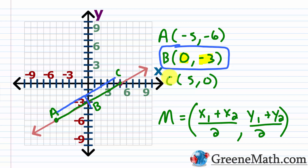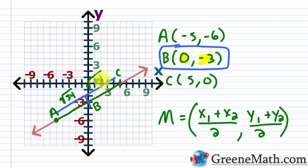This is very simple. If we really wanted to prove this, we could calculate the distance between A and B and between B and C. If we've correctly found the midpoint, the distances will be the same. The distance between A and B is the square root of 34, and the distance between B and C is also the square root of 34. So the distances are equal, and we know we've found the correct midpoint.